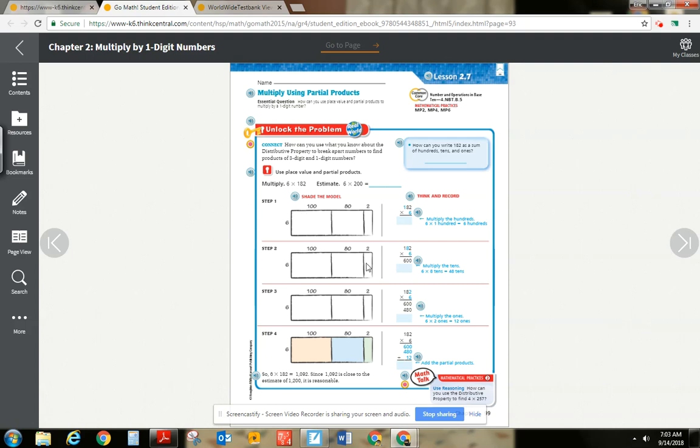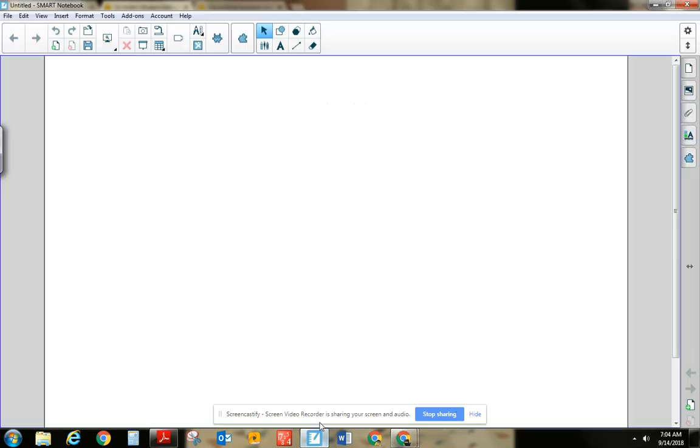So in your book, we start off with unlocking this problem. And it looks really overwhelming, but they're really just repeating a couple of basic steps. So we're going to do 6 times 182, and I'm going to do this on a blank piece of paper. So we write down 6 times 182.